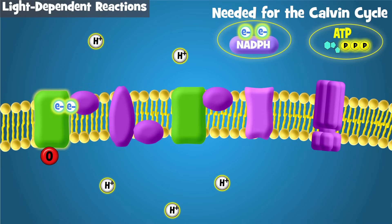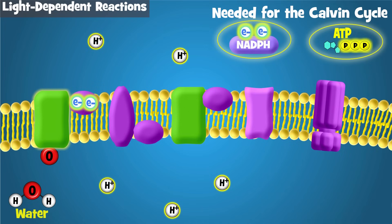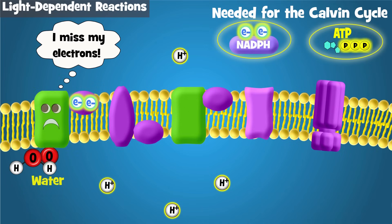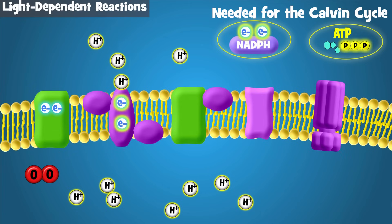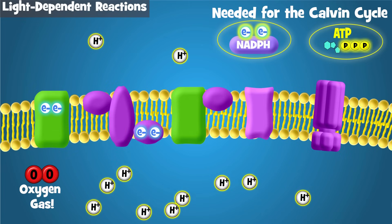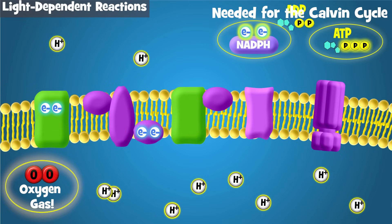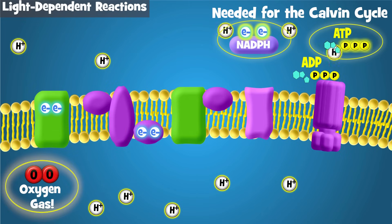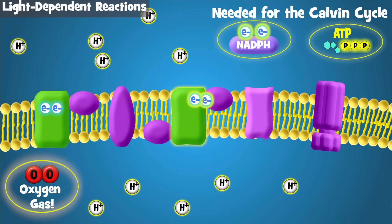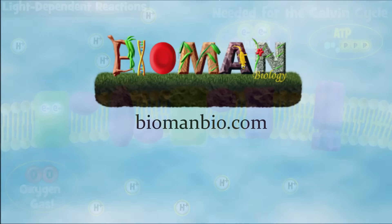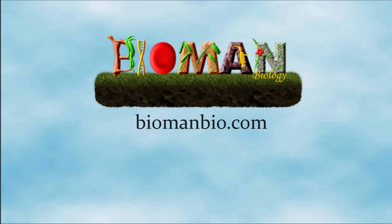Both ATP and NADPH are critical products of the light-dependent reactions that are needed to make sugar in the Calvin cycle, which we will examine in our next video. If you'd like to try the light-dependent reactions yourself, check out the link for the photosynthesis interactive at Bioman Biology. And don't forget to subscribe if you'd like to be notified when I release new videos.